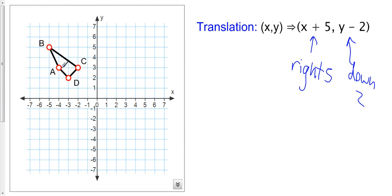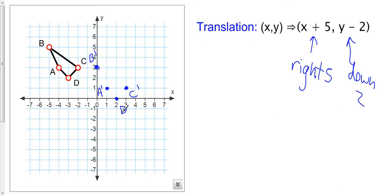So let's start with a: we're going to go right five — one, two, three, four, five — and two down: one, two. So here would be our new a, we'll call it a prime. For b: one, two, three, four, five to the right, down two: one, two — that's b prime. For c — one, two, three, four, five, down two: one, two — here is our new c, we'll call it c prime. And for d: one, two, three, four, five, two down: one, two — here's our new d, we'll call that d prime. Then we just have to connect our vertices.